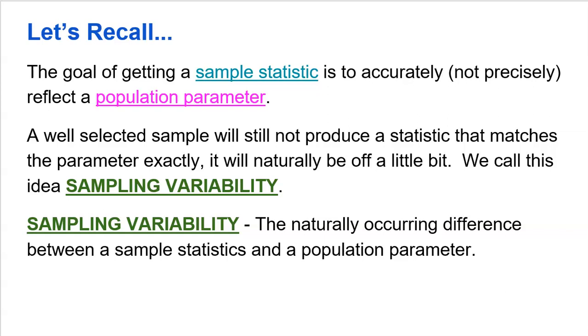A well-selected sample will not produce a statistic that matches the parameter exactly. It will naturally be off a little bit. We call this idea sampling variability — the natural occurring difference between a sample statistic and a population parameter. Some students have a hard time understanding this, so let me dive a little bit deeper into it with a couple examples.